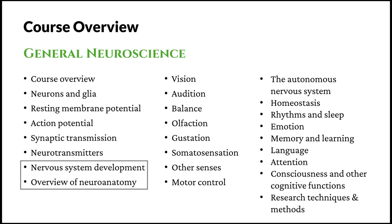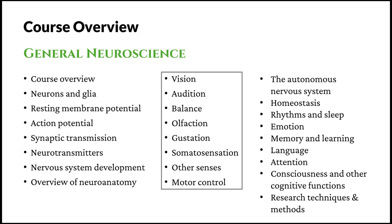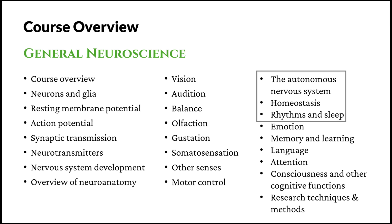This will prepare us for the later studies. After that, we will enter a big part about senses, perception, and motor control — some of the more basic functions of the nervous system. After that, we will learn about how the nervous system keeps us alive through the autonomic nervous system, homeostasis, and rhythms and sleep.